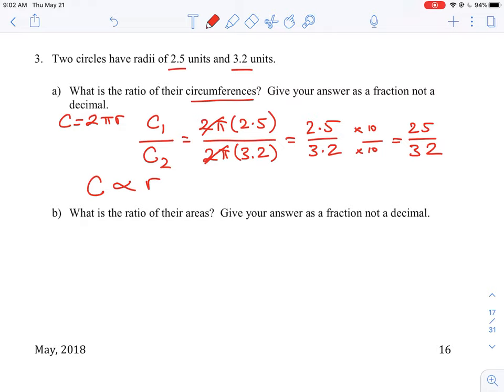Radius to the first power. Because radius is a linear measurement, and circumference is directly proportional to that. So if you increase the radius by a certain amount, you're increasing the circumference by an equivalent ratio amount.